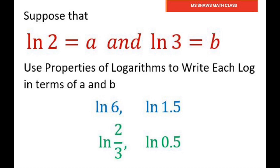Before we get started, since we're using ln of 2 and ln of 3, I'm going to write this one as ln of 3 divided by 2, and I'm going to write this one as ln of 1 divided by 2. Don't forget that ln of 1 equals 0.